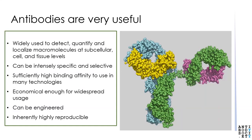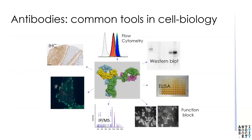We have to depend on antibodies often to isolate, identify, quantify and localize proteins in and from cells and tissues, and they are common tools in many cell biological techniques. That's because we lack the high sensitivity and resolution direct analysis tools that we have for nucleic acids, things like PCR, restriction enzymes, sequencing. Antibodies have evolved in vertebrates to recognize non-self from self and they can distinguish between tiny differences in molecular structure.